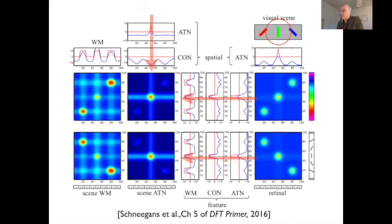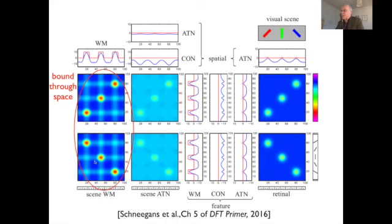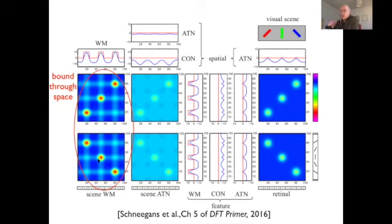You can do this for the second and third objects. As you read these into the working memory representation, you can see the binding problem in the background — there are other possible bindings, illusory conjunctions — but these do not happen because of the activation along space. As you enter an item, the peak aligns with the peaks in the other field because the shared spatial dimension selects the matching peak from all possible peaks.